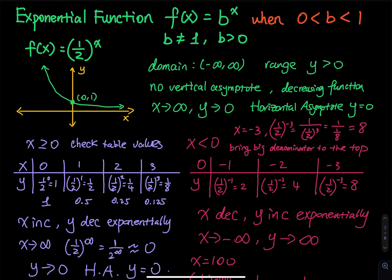Since x can be any number, there is no vertical asymptote. This is clearly a decreasing function. As x approaches positive infinity, the curve approaches zero — approaches the x-axis — so the horizontal asymptote is y equals zero.